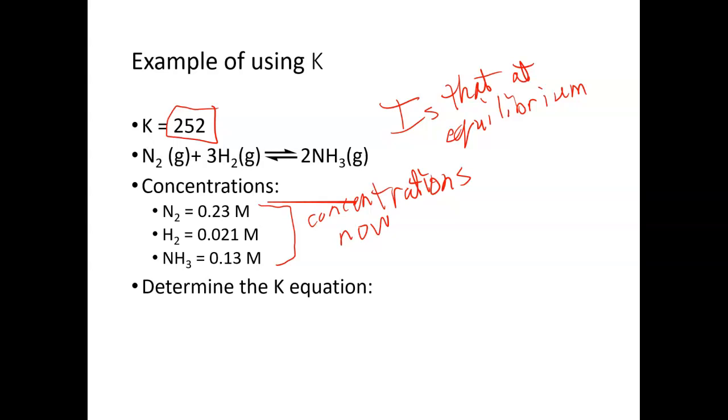We're going to use the K equation. So K equals our products, which is NH3 with coefficient 2 squared, over concentration of nitrogen with exponent of 1, times hydrogen with exponent of 3, because that's the coefficient. So this is our K equation, and we can plug our values into it.